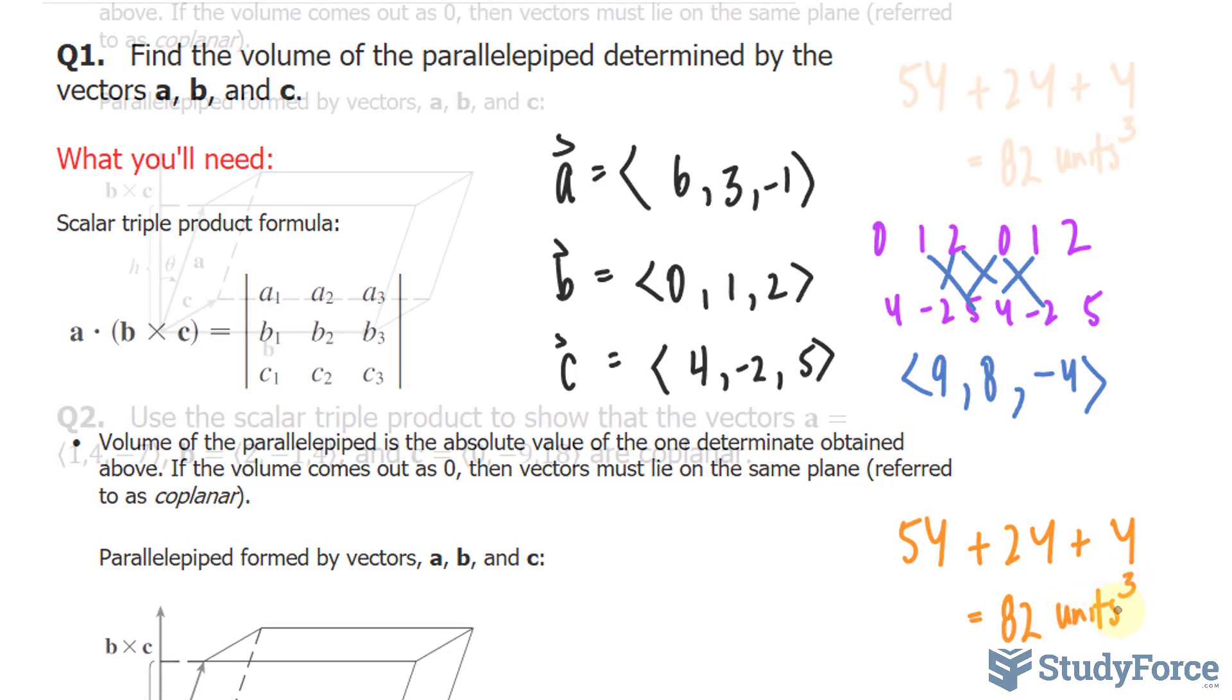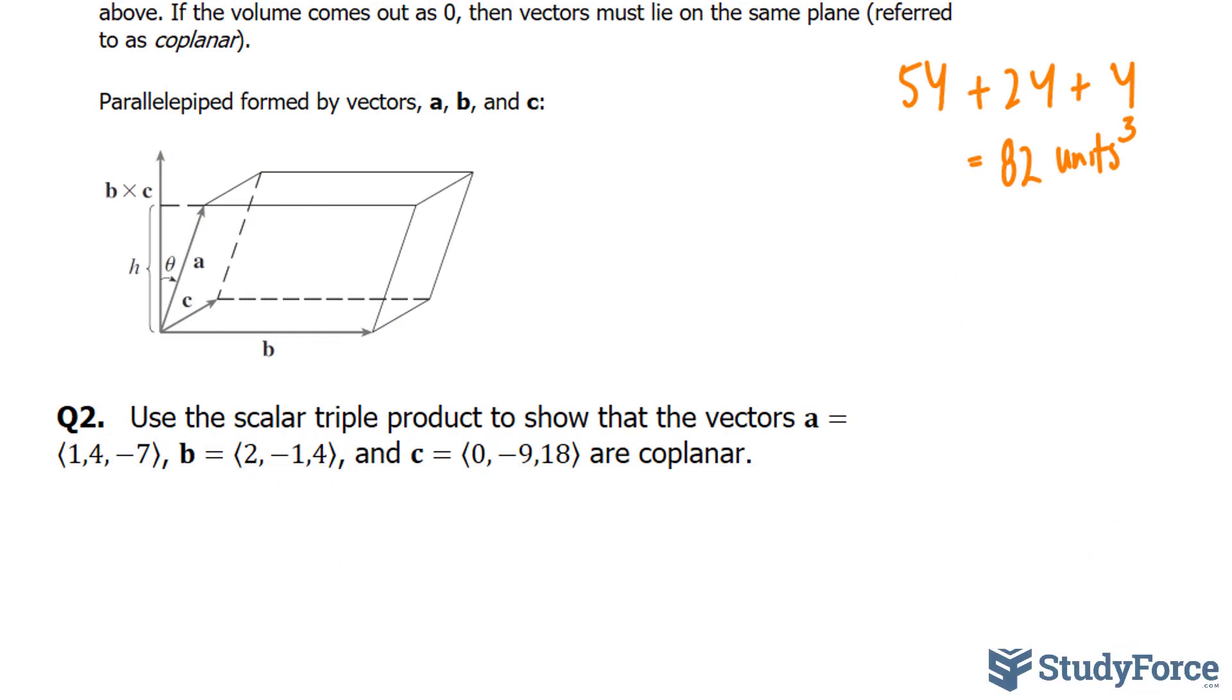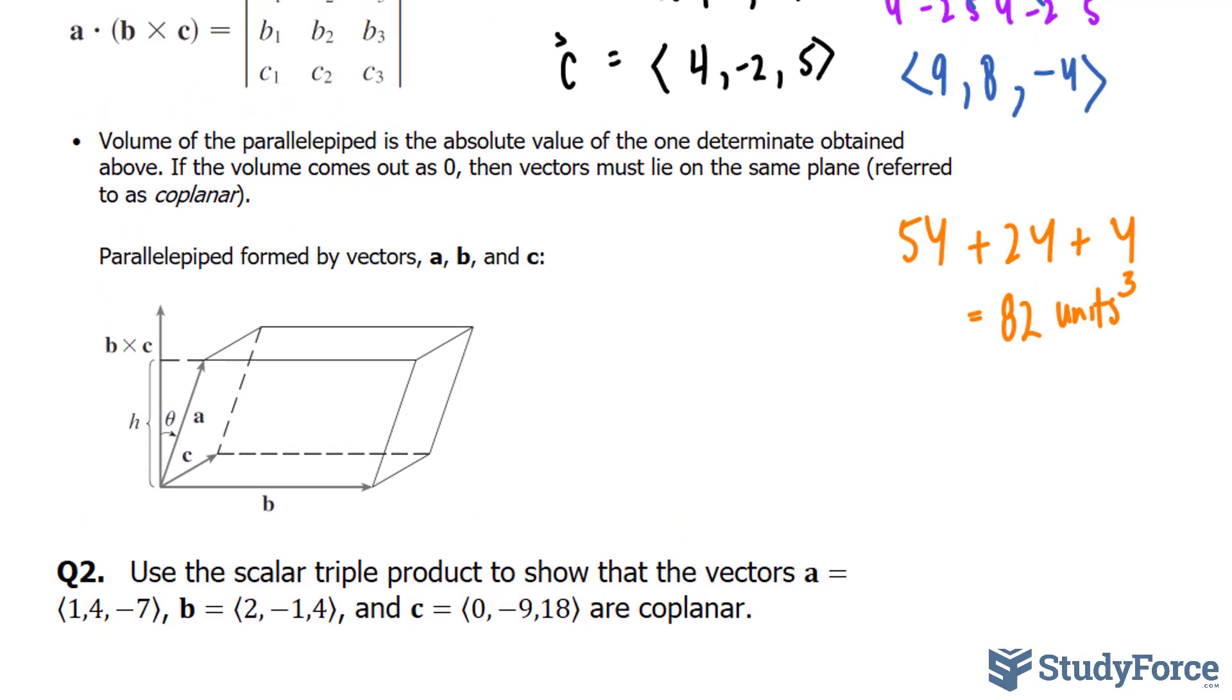Now let's move on to question 2. This time we're asked, use the scalar triple product to show that the vectors a, b, and c are coplanar. Going back to here, we're told that if the volume comes out as 0, the vectors then must lie in the same plane. And that's what's referred to as coplanar. So we'll do the same thing as before, find the scalar triple product and see if it's 0.